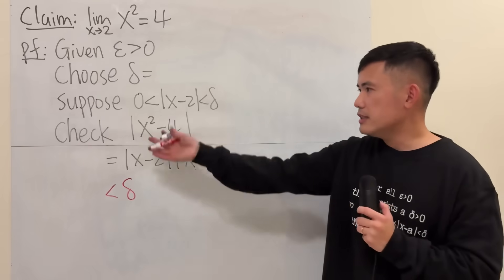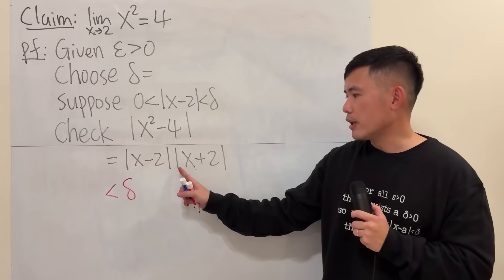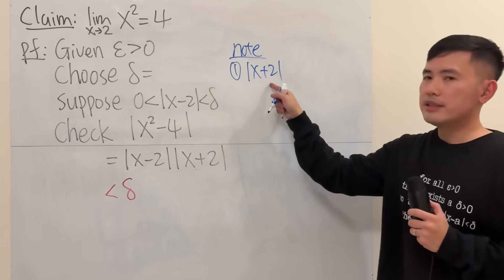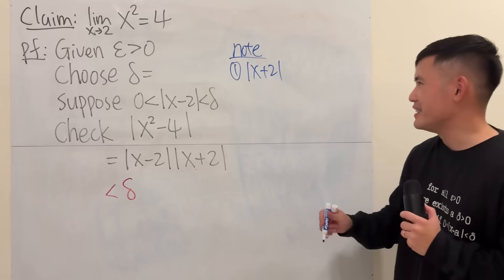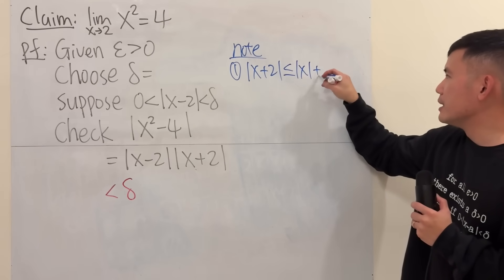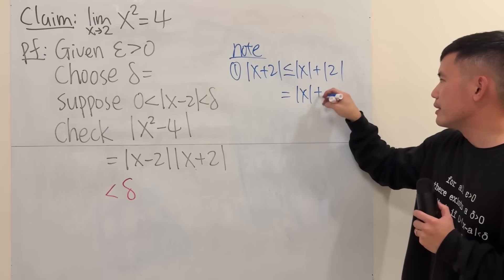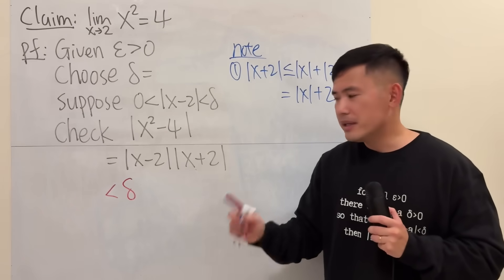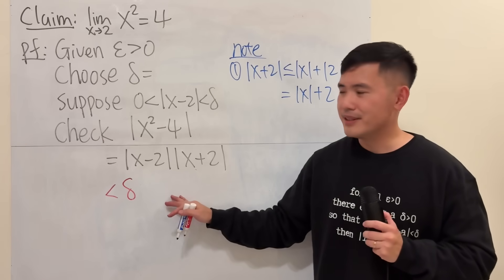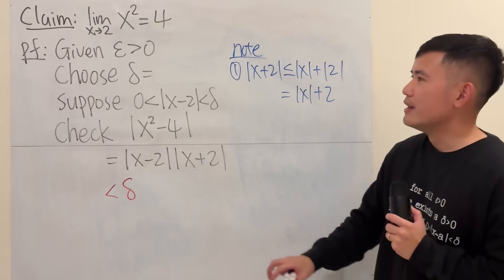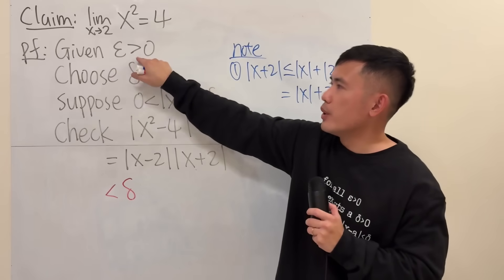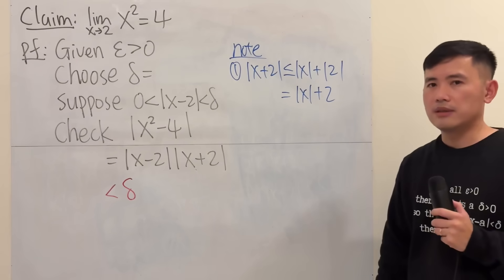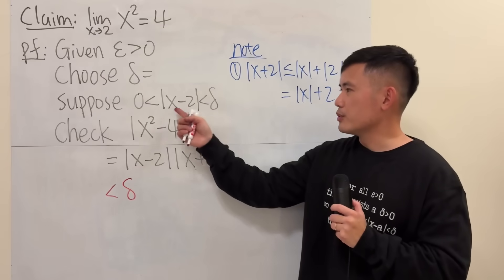The earlier steps are still the same. The key is figuring out how to handle absolute value of x plus 2. Here are some notes. Note 1: absolute value of x plus 2 — notice we have two terms inside, which is good because we can use the triangle inequality: it's less than or equal to absolute value of x plus absolute value of 2, which equals absolute value of x plus 2. But do not just leave it as absolute value of x plus 2, because in this step you should not see any x. When writing proofs, delta must be an expression in terms of epsilon only — no x allowed.